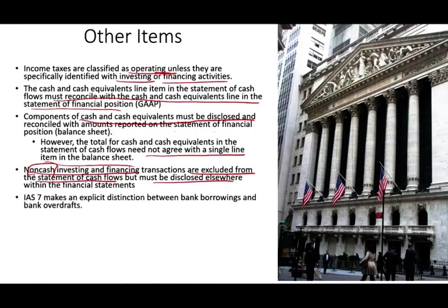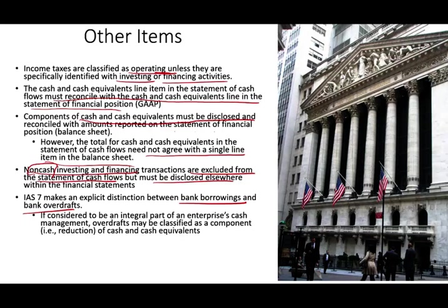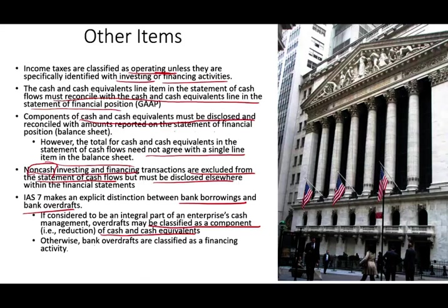IAS 7 makes an explicit distinction between bank borrowing and bank overdraft. Bank borrowing is lending, and a bank overdraft is when you go over the money you have in your bank account. If the overdraft is considered an integral part of the enterprise's cash management, it might be classified as a component — a reduction of cash and cash equivalent. Otherwise, bank overdrafts are classified as financing.